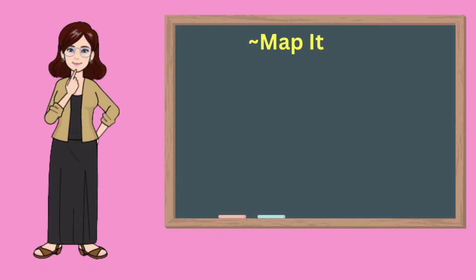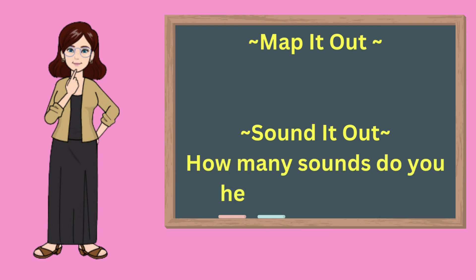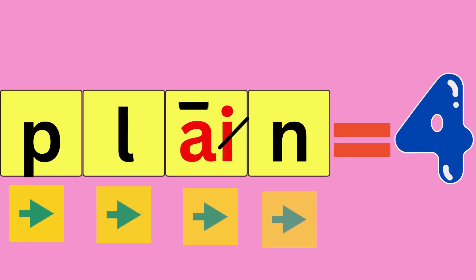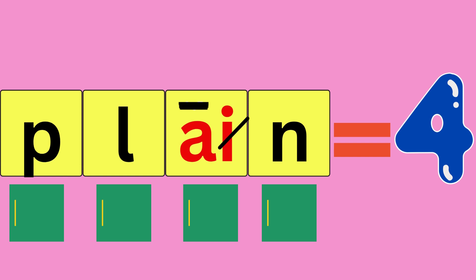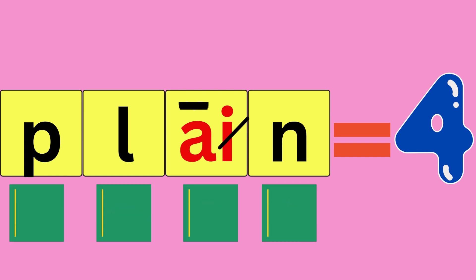Now we will map each word out and identify how many sounds each word has. Get ready and map it out and sound it out with me. Be sure to say how many sounds you hear in each word. Plain: P-L-A-N, plain. How many sounds did you hear? Four.